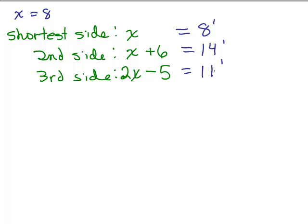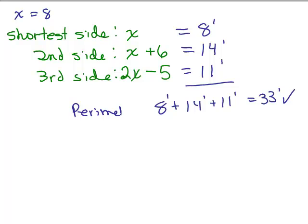Okay, so first let's check out and see if that gives us the correct perimeter. It was supposed to be 33 feet. So when we add those up, 8 feet plus 14 feet plus 11 feet equals 33 feet. So that checks out. The perimeter seems to be correct.